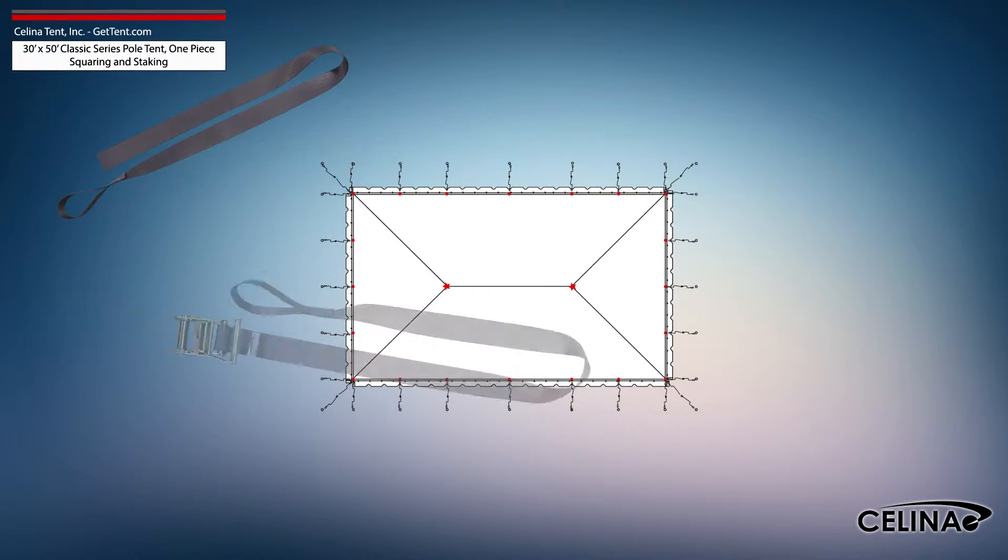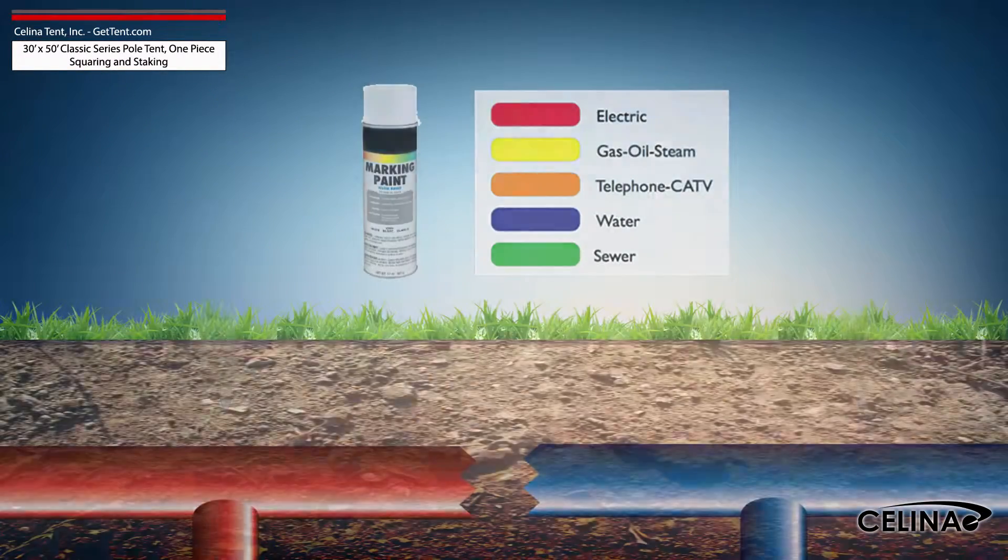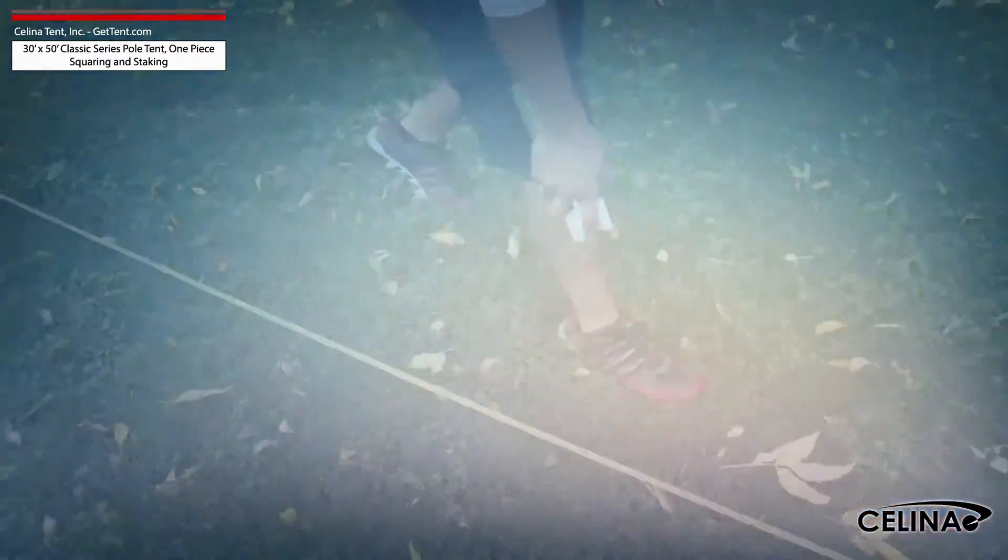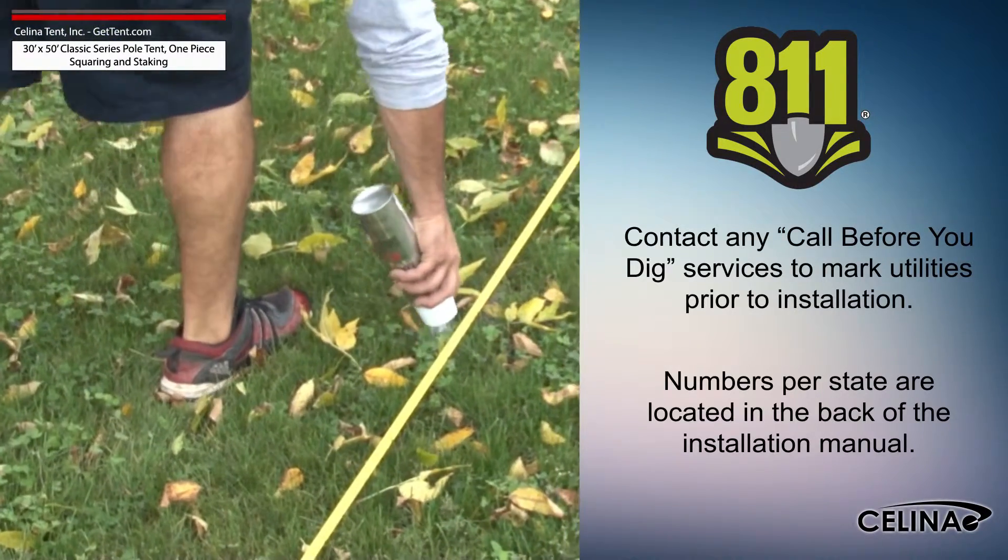Tent squaring allows the installer to accurately place all tent hardware and install tent stakes prior to beginning setup and helps them avoid any marked underground utilities. Utilities must be marked by your state's local utility services prior to any tent installation.